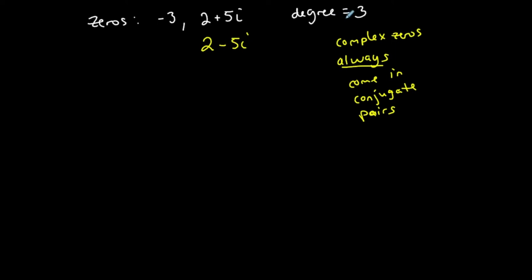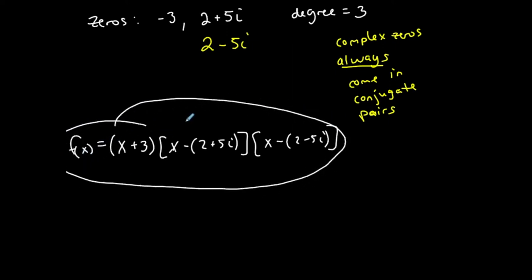So how do I write this out? The factors: x plus three is one factor, x minus this complex zero here, two plus five i, is another factor, and x minus two minus five i is another factor. This is my function in factored form, technically, but if I don't want it in factored form, I have to multiply this out.